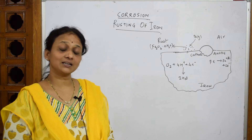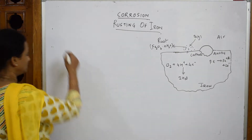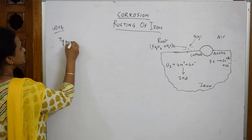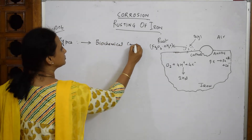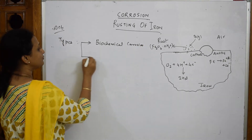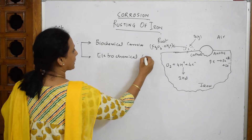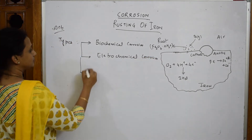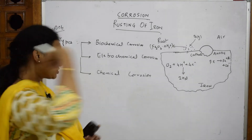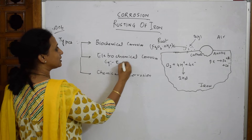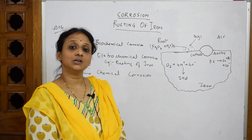At grade 12 standard, corrosion is divided into three types: biochemical corrosion, electrochemical corrosion, and chemical corrosion. The CBSE syllabus focuses on electrochemical corrosion. Your rusting of iron example comes under electrochemical corrosion.